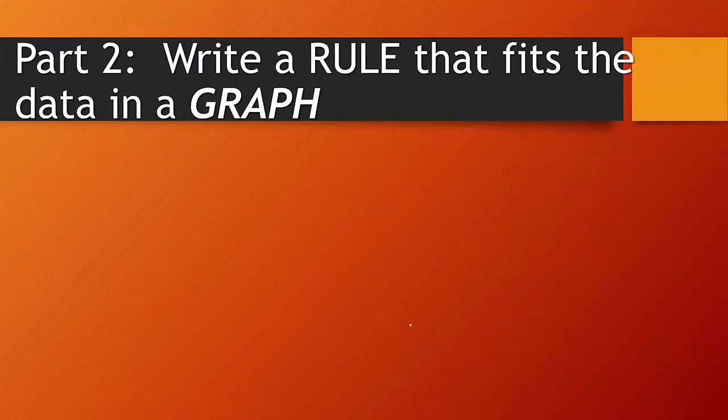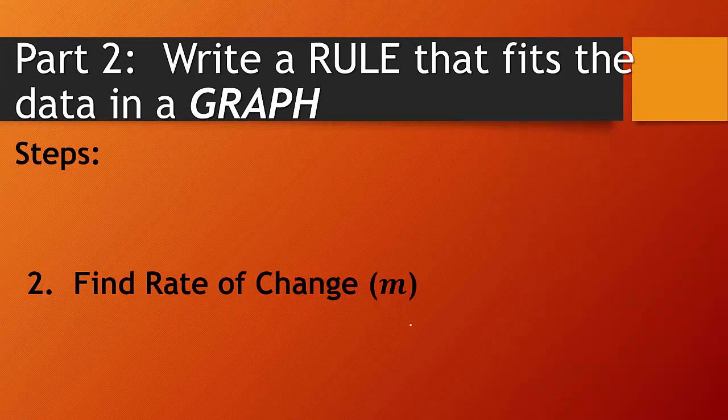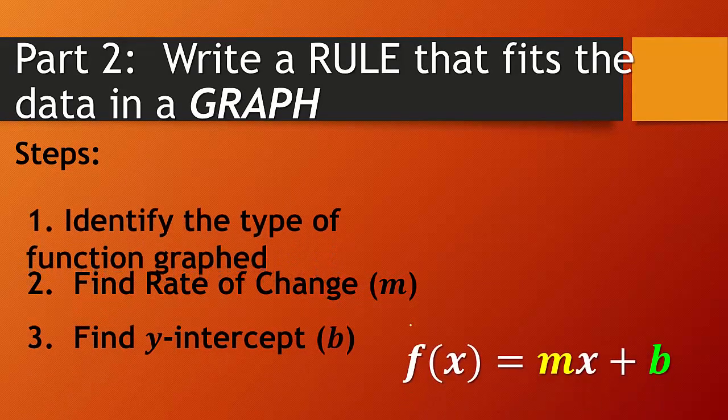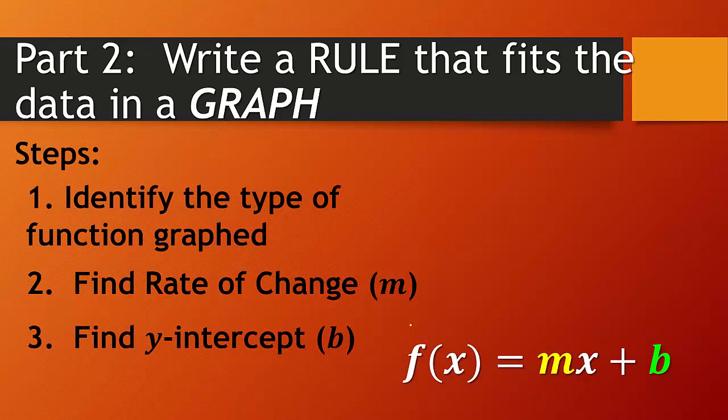Alright, now we're writing a rule that fits the data in a graph. Steps for this, find the rate of change, find the y-intercept again. But we're going to add one, and that's going to be identify the type of function graph.